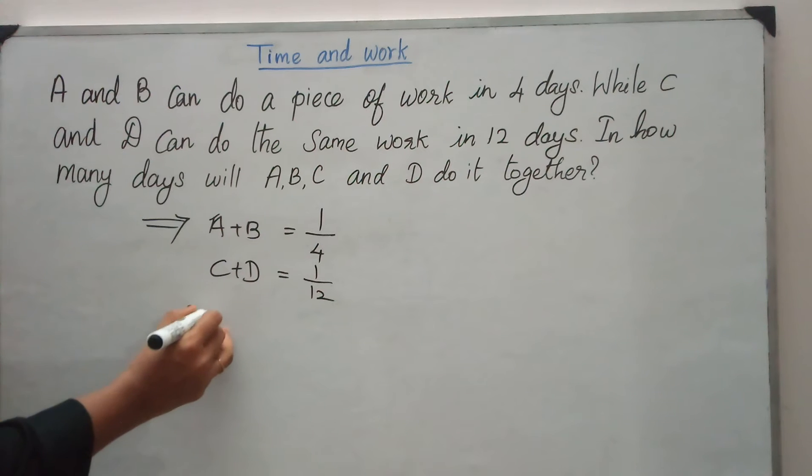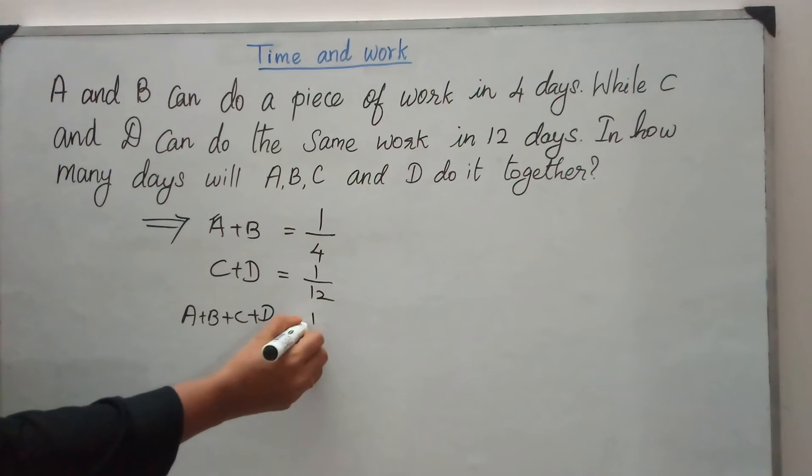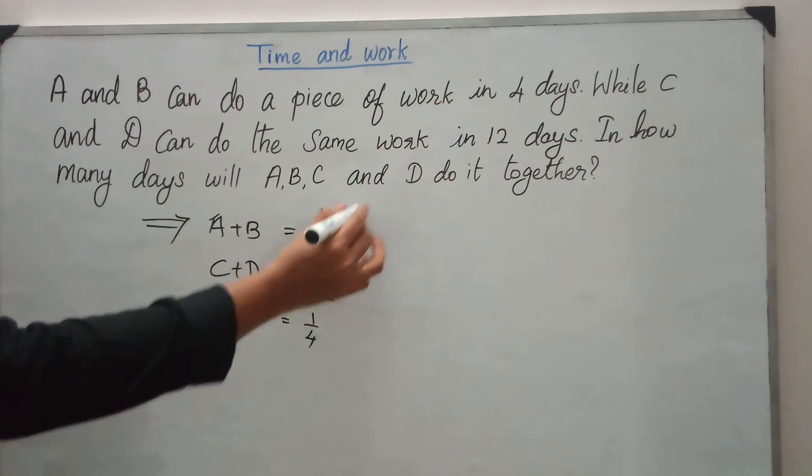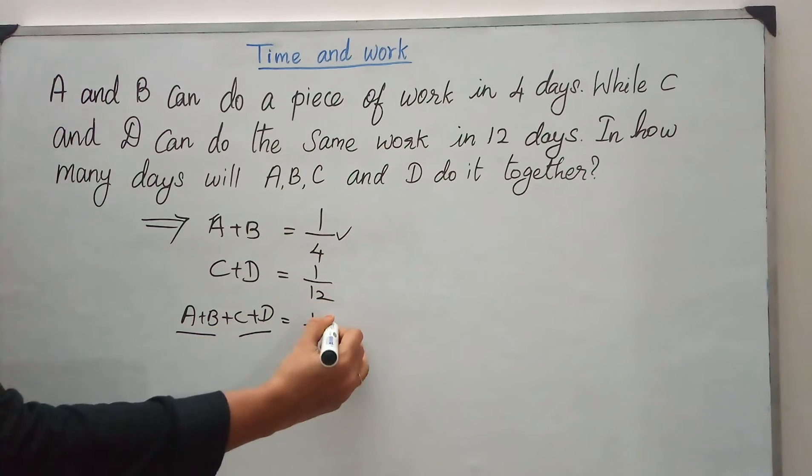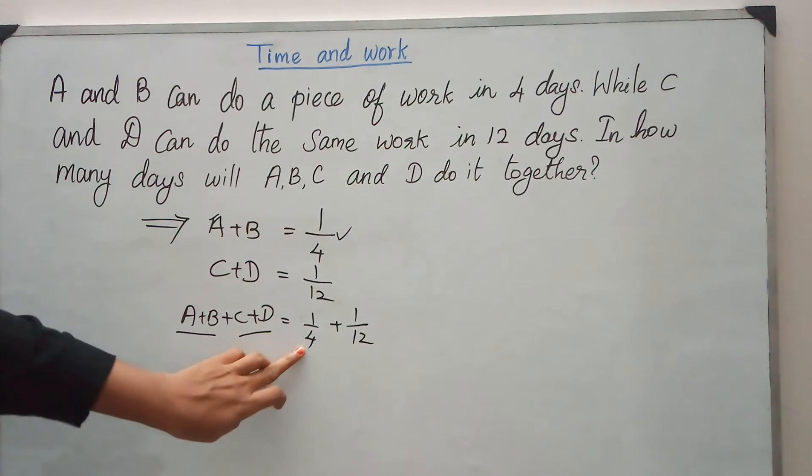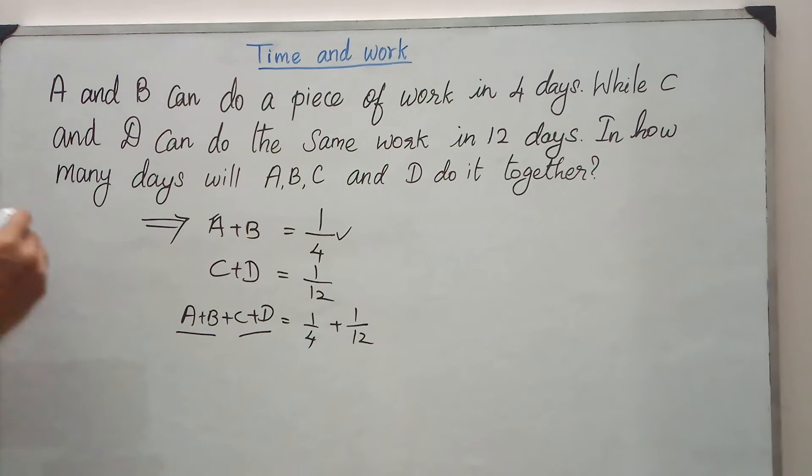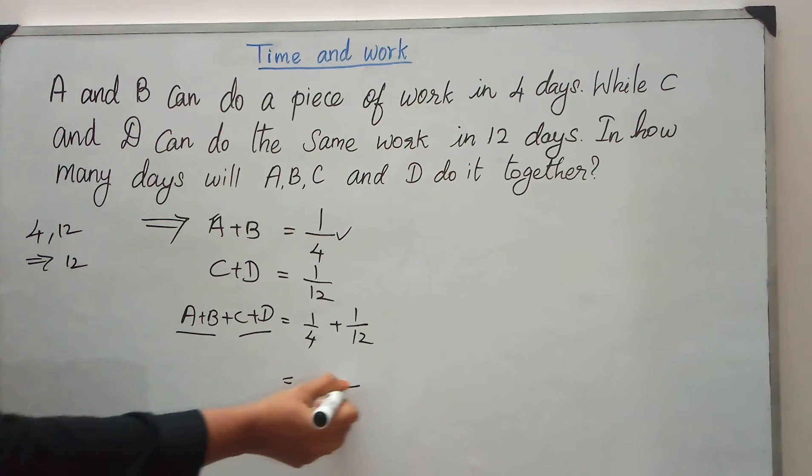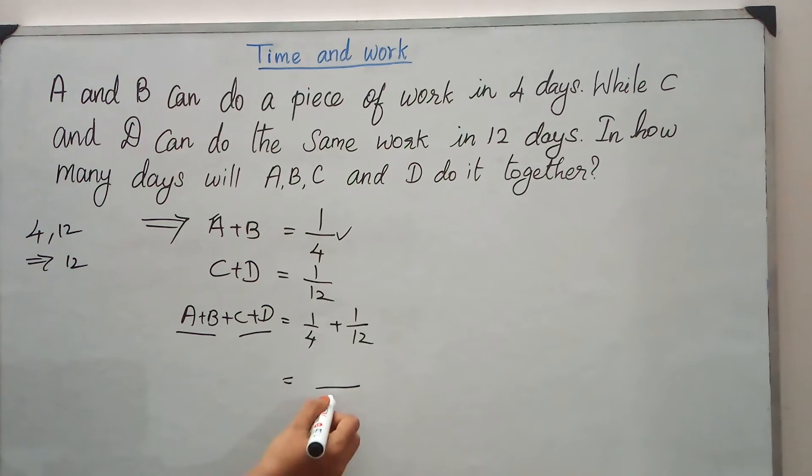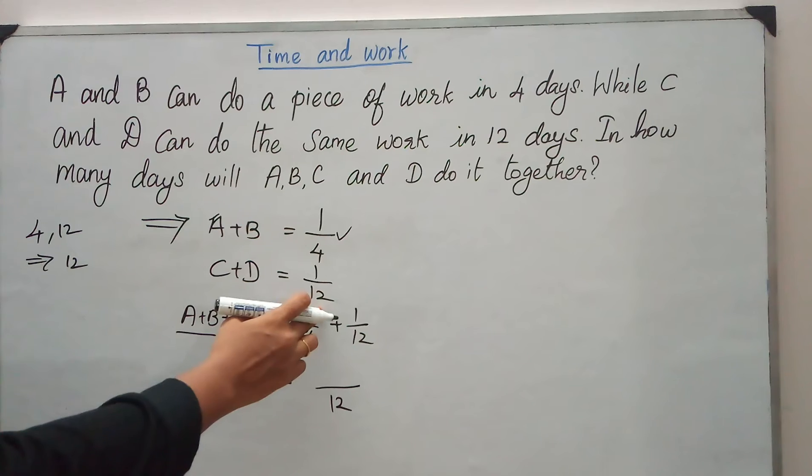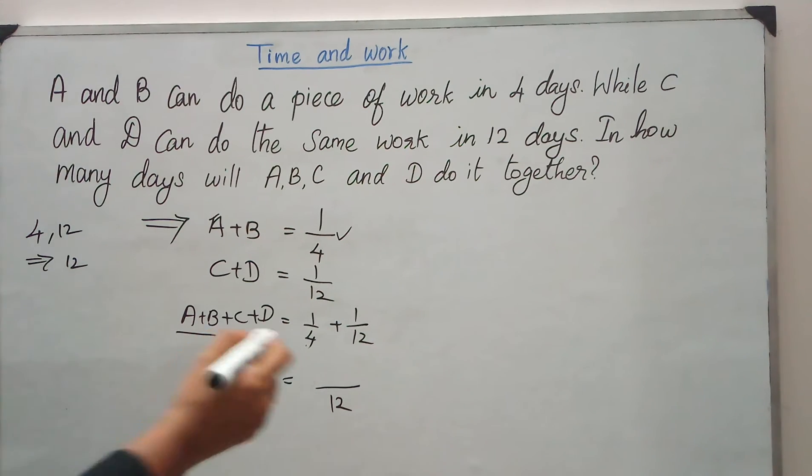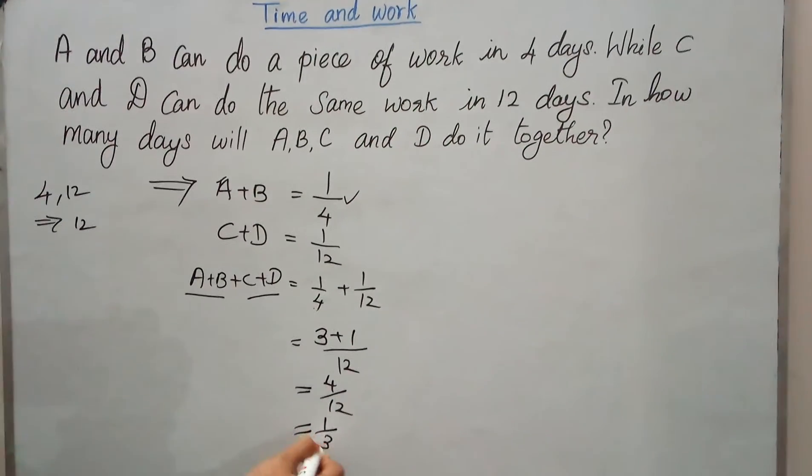So A plus B plus C plus D. The value of these two is 1 by 4, the value of these two is 1 by 12. So 1 by 4 plus 1 by 12. We know that LCM of 4 and 12 is 12. So just add these fractions. What will be the answer now? You have to multiply here by 3, so the same you got to multiply in the numerator. So here 3 plus here 1, so 4 by 12 which is nothing but 1 by 3.